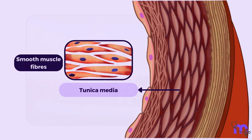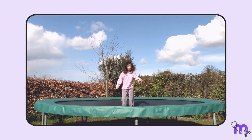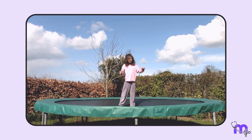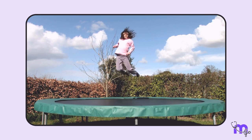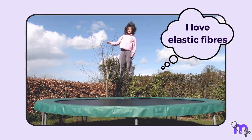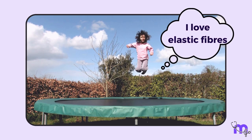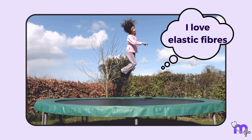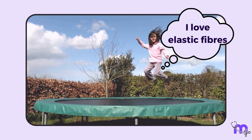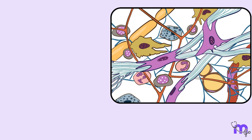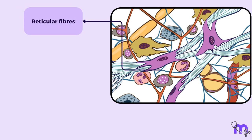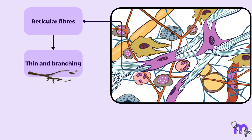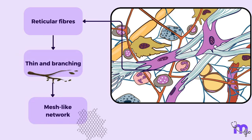So next time you are bouncing on a trampoline or doing a backflip, thank your elastic fibers for their hard work keeping you flexible and springy. Lastly, we have the reticular fibers, which are thin and branching, forming a mesh-like network.